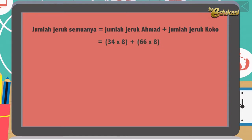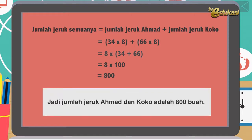Atau sama dengan 8 dikali (34 ditambah 66), sama dengan 8 dikali 100, sama dengan 800. Kesimpulan: jadi jumlah jeruk mereka berdua adalah 800 buah. Ingat, belajar matematika bersama Pak Ridwan membuat matematika menjadi lebih mudah.